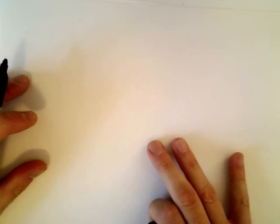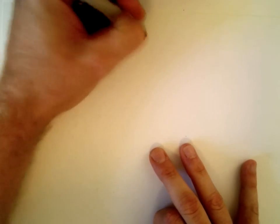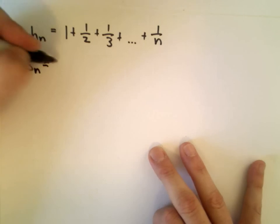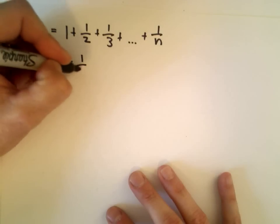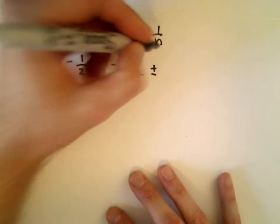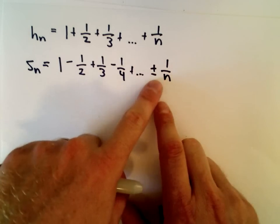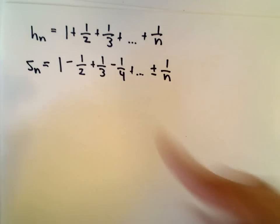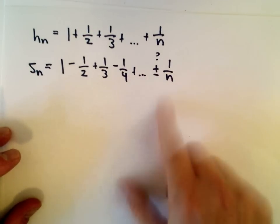It's going to be a few minutes because I want to show some extra steps just to make sure everything is clear. I'm going to let h sub n be the first n terms of the harmonic series: 1 plus a half plus a third plus dot dot dot plus 1 over n. I'm going to let s sub n be the same thing except we're going to use the alternating harmonic series: 1 minus a half plus a third minus a fourth plus dot dot dot, plus or minus 1 over n. It's the first n terms of the alternating harmonic series.